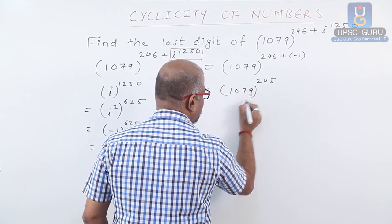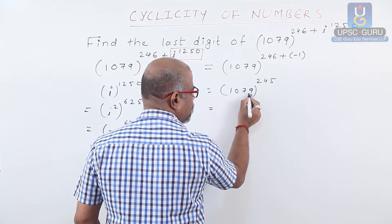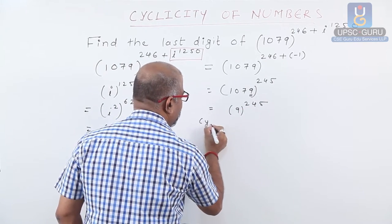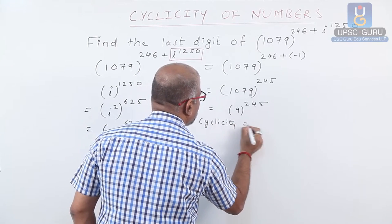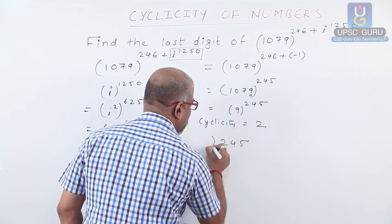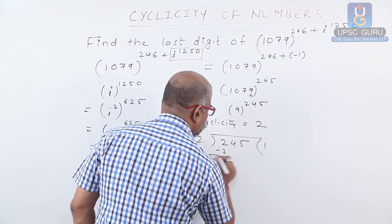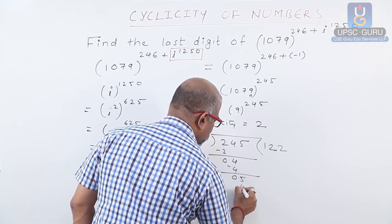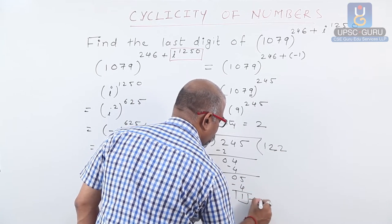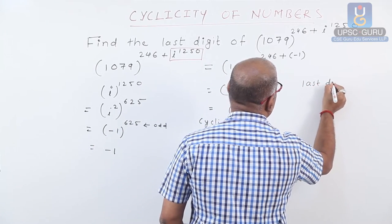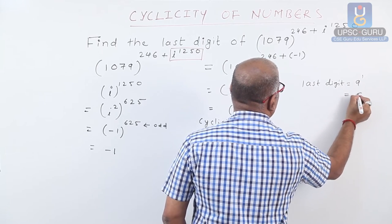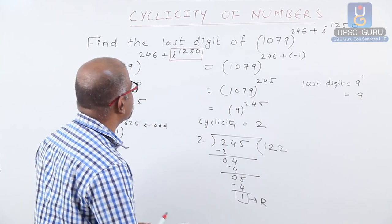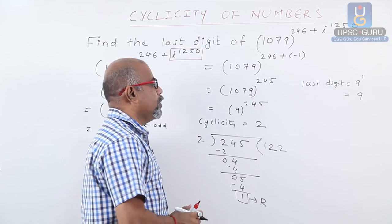The last digit of 1079 is 9. Therefore, the last digit of this number is the same as the last digit of 9 to the power 245. Cyclicity of 9 equals 2. Dividing 245 by 2, the remainder is 1. When remainder is 1, the last digit equals 9 to the power 1 equals 9. Therefore, the last digit of 1079 raised to 246 plus i raised to 1250 is equal to 9.